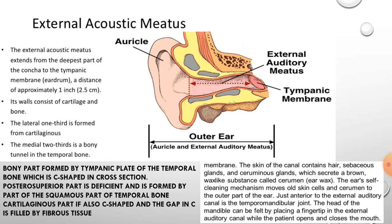The external auditory meatus has two parts: a lateral third and a medial two-thirds. The lateral third is cartilaginous and lined with skin continuous with the auricular skin. The medial two-thirds is bony and lined with thin skin continuous with the external layer of the tympanic membrane. The bony part is formed by the tympanic plate of the temporal bone, which is C-shaped in cross-section, with the posterior superior part formed by the squamous part of the temporal bone. The cartilaginous part is also C-shaped and the gap is filled by fibrous tissue.